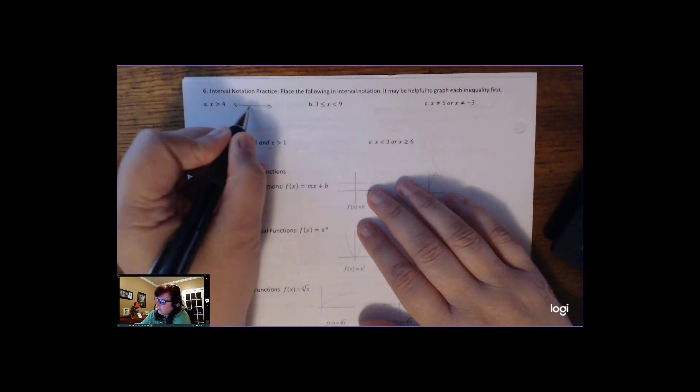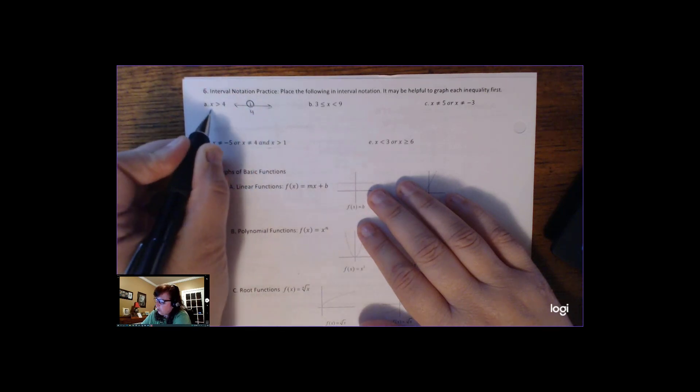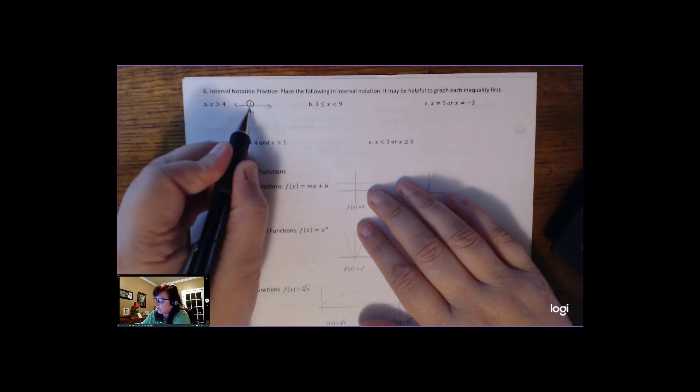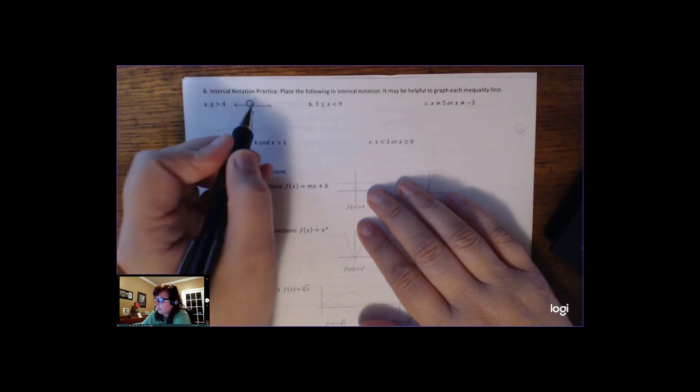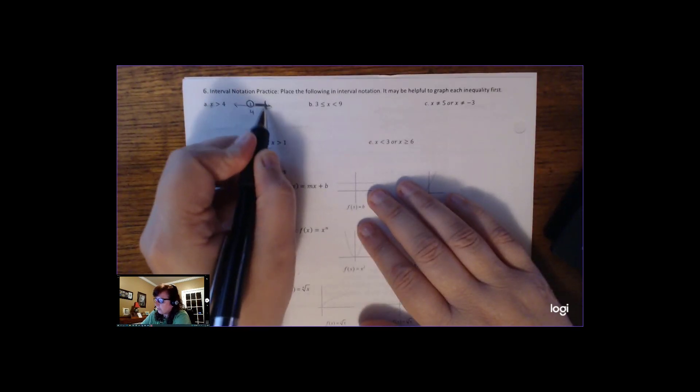So we might want to graph this first. x is greater than 4 looks like there's a 4 there, and 4 is not greater than 4, so we would put an open circle there, and then all the numbers greater than 4 are to the right of 4. So that's what the number line looks like.